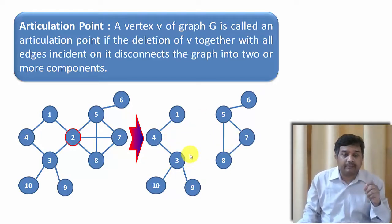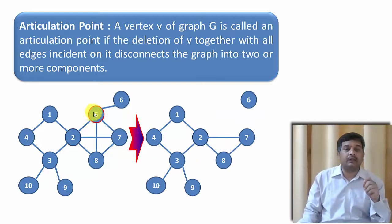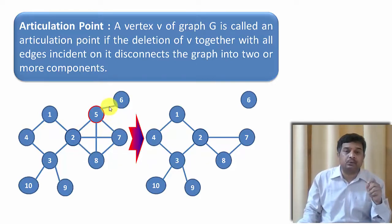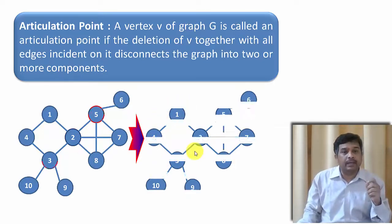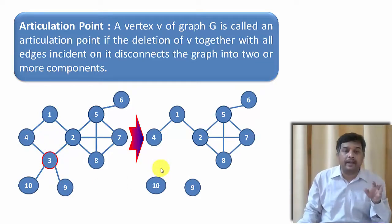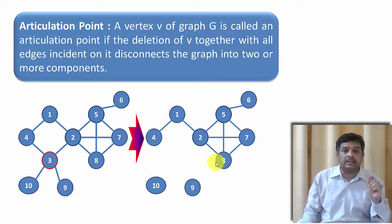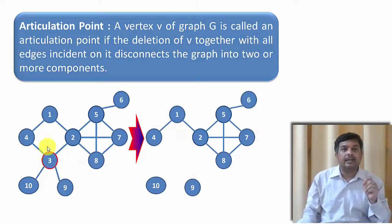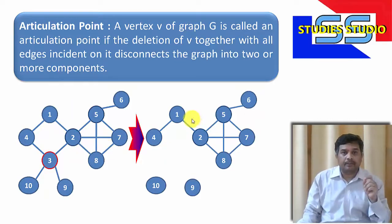Let us see if we are deleting vertex 5, then what is happening? Along with vertex 5, the edges associated with 5 will also be deleted. It becomes a disconnected graph having two components: vertex 6 has one component and the rest has one component. Similarly, if we want to delete vertex 3, whatever edges associated with vertex 3 are also going to be deleted. Now it becomes 3 components: vertex 1 is a single component, vertex 9 is a single component, and the rest of the vertices form one more component. So we have seen that by deleting a particular vertex, a graph becomes disconnected. Then that particular vertex is called an articulation point.